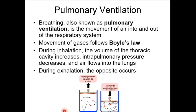During exhalation, for the respiratory diaphragm, that's actually passive relaxation. It relaxes back up into a dome shape, putting pressure on the thoracic cavity. Now you have that same volume of air under more pressure, increasing pressure inside the lungs, and air goes out down its pressure gradient.